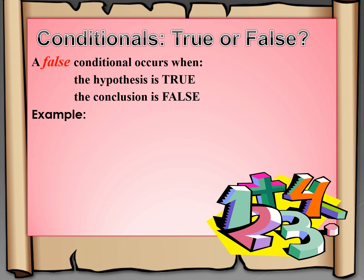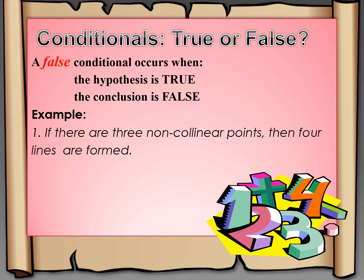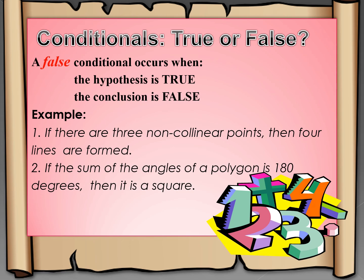A false conditional occurs when the hypothesis is true and the conclusion is false. Here are some examples. Number one: If there are three non-collinear points, then four lines are formed. The hypothesis is true, but our conclusion is false. Number two: If the sum of the angles of a polygon is 180 degrees, then it is a square. Why is it that our statement is false? Because if the sum of the angles of a polygon is 180, then it must be a triangle.